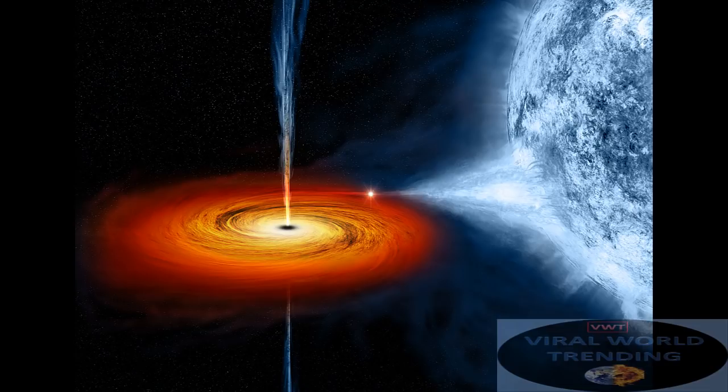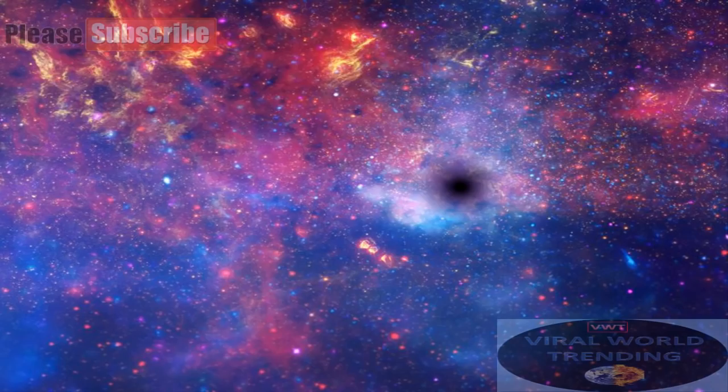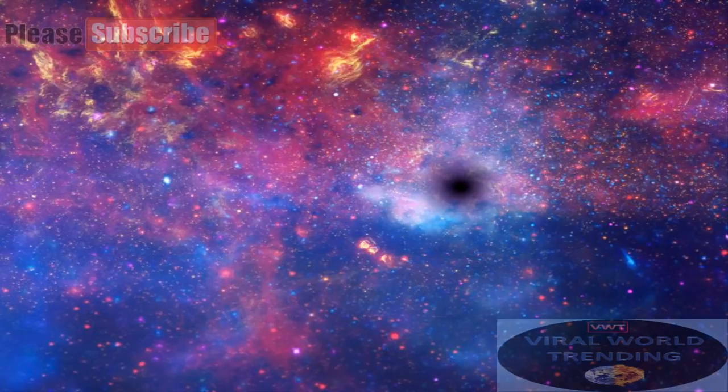If black holes are black, how do scientists know they are there? A black hole cannot be seen because strong gravity pulls all of the light into the middle of the black hole. But scientists can see how the strong gravity affects the stars and gas around the black hole.